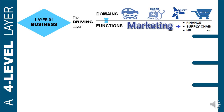Layer number one is the business layer — the driving layer — divided into domains like automotive, healthcare, energy, retail, etc. And then the functions: the core function that we talk about is marketing, along with other functions of finance, supply chain, human resources, etc. That is what I would call the driving layer.